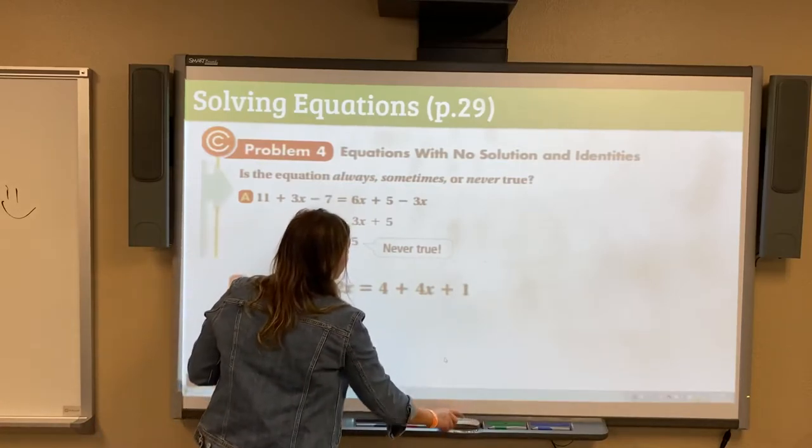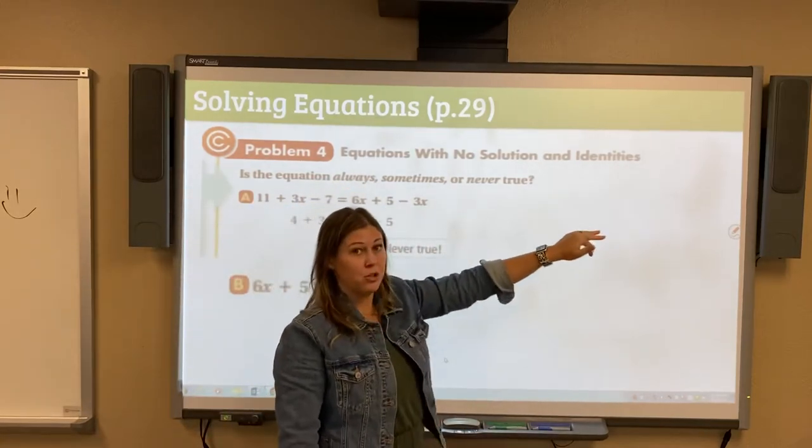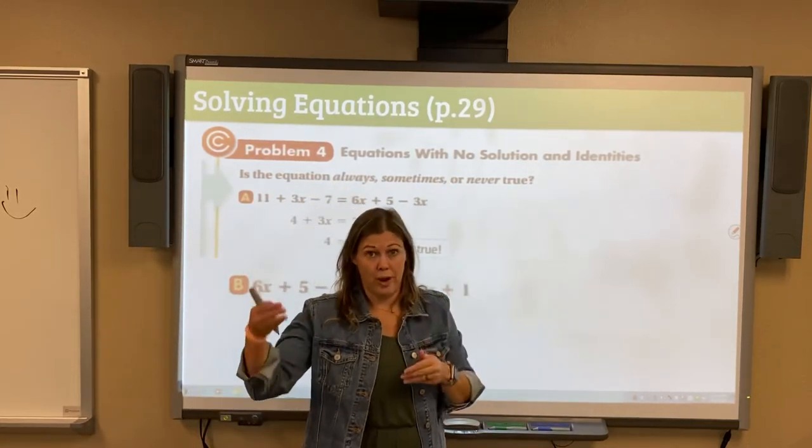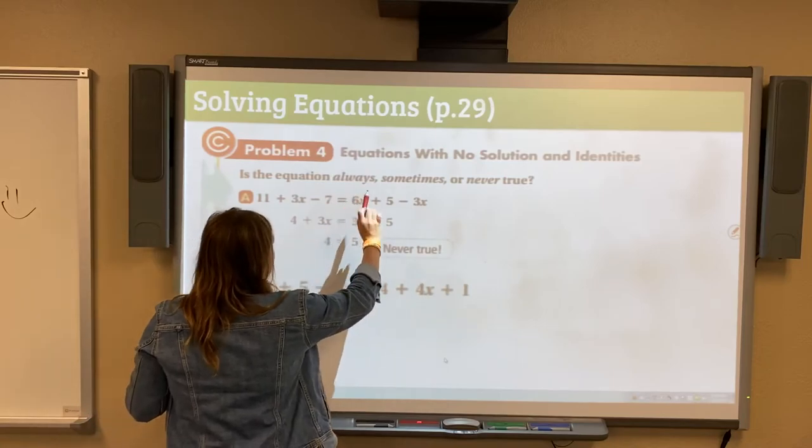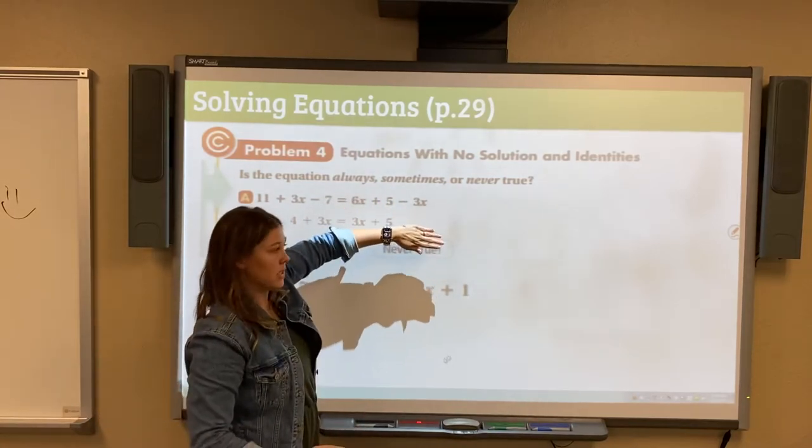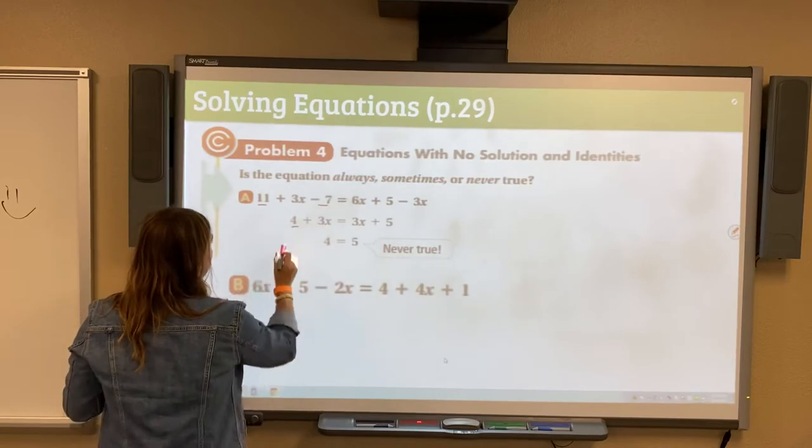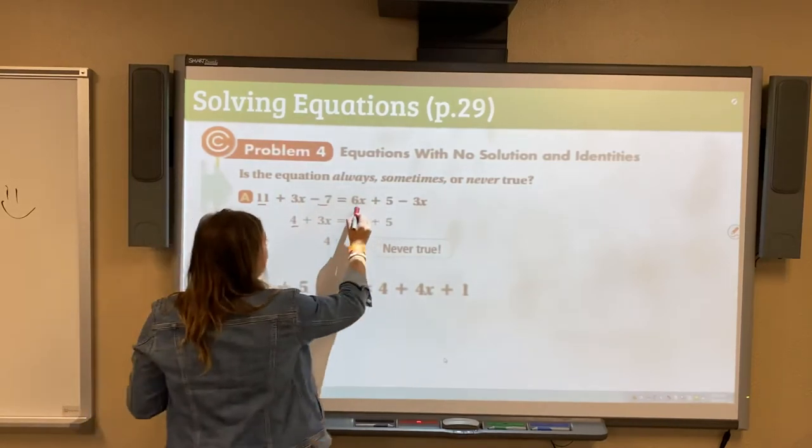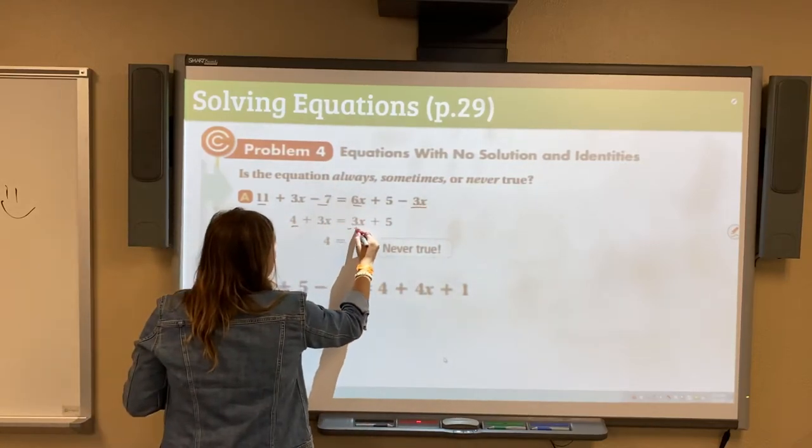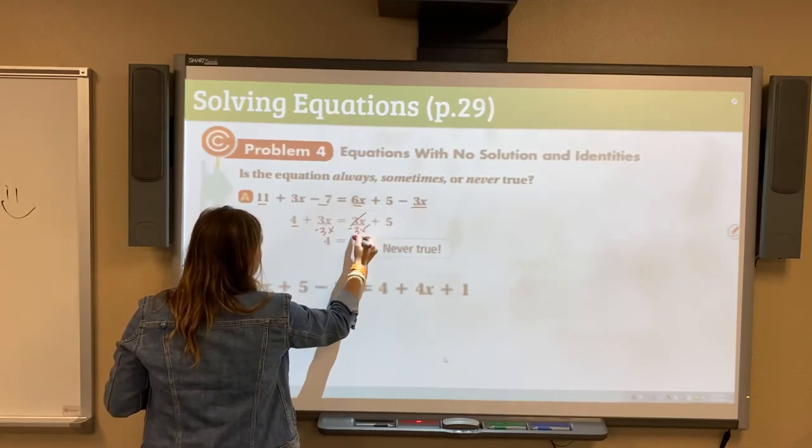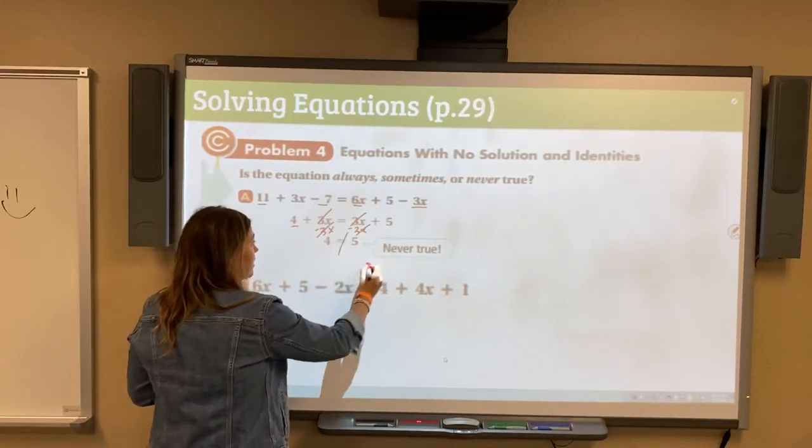Now let's talk about equations with no solution and identities. Is the equation always, sometimes, or never true? With equations, it's either going to always be true or never be true. In this case, we have 11 plus 3X minus 7 is equal to 6X plus 5 minus 3X. On the left, we can combine the 11 minus 7 to get 4. So 4 plus 3X. Here, we combine our 6X minus 3X to get 3X plus 5. If we move our 3X to the other side, this cancels and this cancels, but that also cancels. So that's why we have just 4 equals 5. 4 does not equal 5. So it's never true.